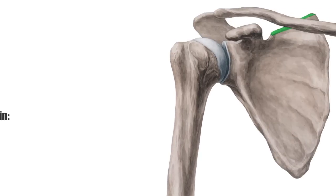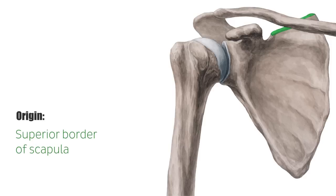The omohyoid muscle is divided into a superior and inferior belly. The inferior belly begins at the superior border of the scapula, ascends craniomedially, and merges into an intermediate tendon at the height of the lateral cervical region. This tendon is connected to the carotid sheath which surrounds the neurovascular bundle, which includes the common carotid artery, internal jugular vein, and vagus nerve.